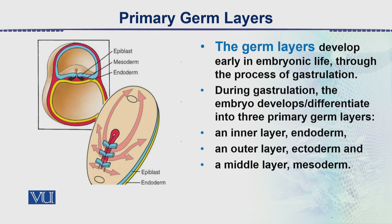During gastrulation, the embryo develops and differentiates into three primary germ layers: the inner endoderm, the outer ectoderm, and the middle mesoderm. This is the diagram we have seen in past lectures, showing the primitive streak and the arrows that indicate the movement of cells. This cut section also shows the ectoderm, mesoderm, and endoderm cells.